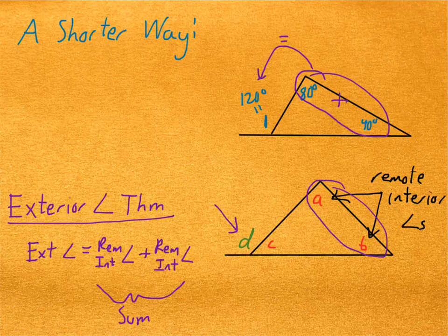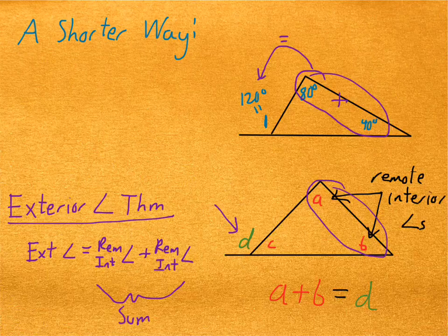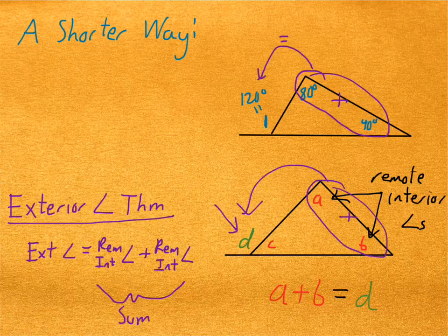Another way that we could say it, using the letters in the diagram, is that A plus B is going to be equal to the exterior angle, which is D. That's not too hard to understand, right? So let's apply it to an example.